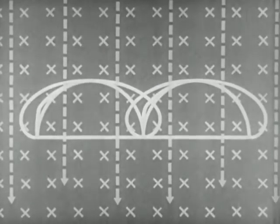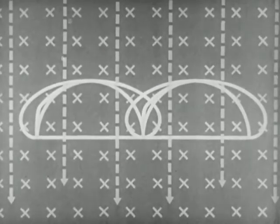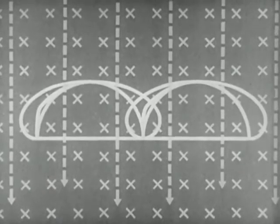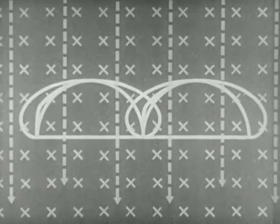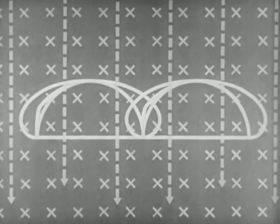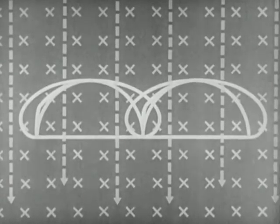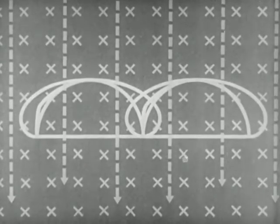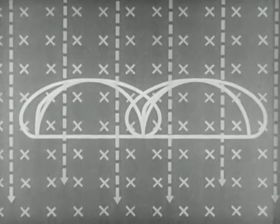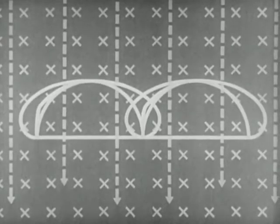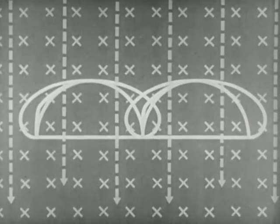These four orbits, or cycloids as they are called, are typical of all which can occur in uniform and mutually perpendicular electric and magnetic fields. The horizontal distance covered by each electron in one cycle is the same, and the time required to complete the journey is the same.